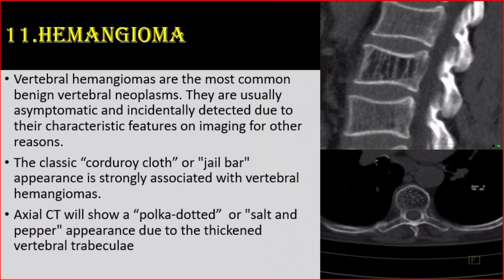Number 11: Hemangiomas. Vertebral hemangiomas are the most common benign vertebral neoplasms. They are usually asymptomatic and incidentally detected due to their characteristic features on imaging. The classic corduroy cloth or jail bar appearance is strongly associated with vertebral hemangiomas. Axial CT will show a polka-dot or salt-and-pepper appearance due to thickened vertebral trabeculae.